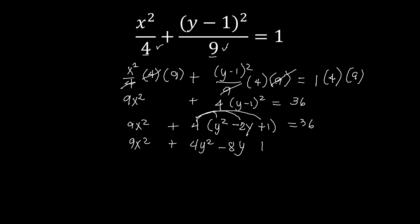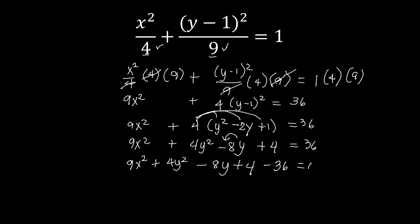Distributing 4: 4 times y squared is 4y squared, 4 times negative 2y is negative 8y, and 4 times 1 is positive 4, equal to 36. Arranging: 9x squared plus 4y squared — no x term — minus 8y, plus 4. Moving 36 to the other side gives minus 36, then 4 minus 36 is negative 32, equal to 0. So the general equation is 9x squared plus 4y squared minus 8y minus 32 equal to 0.